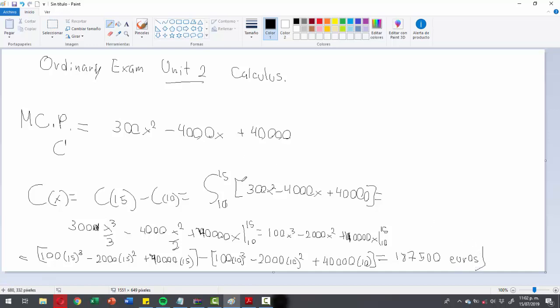Which is the cost to increase the production from 10,000 to 15,000. Remember that the original formula gave us thousands per unit, so when we evaluate it we just have to evaluate from 10 to 15, and that's the result.